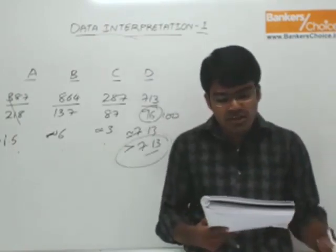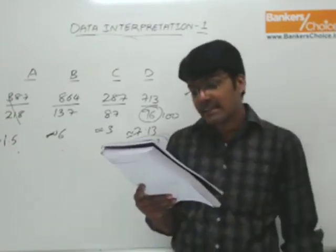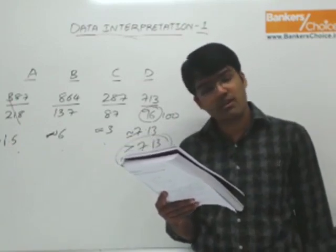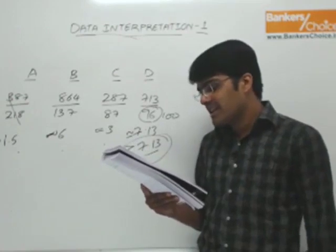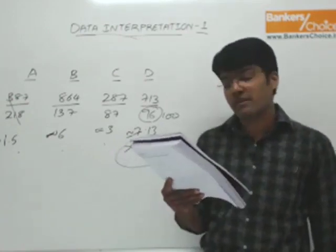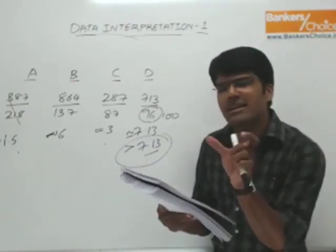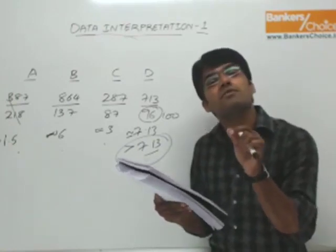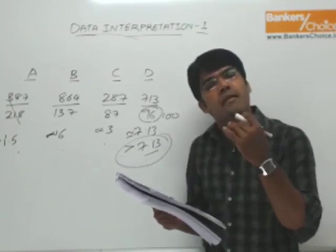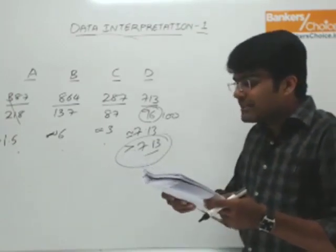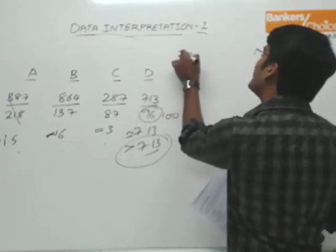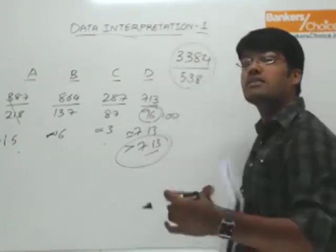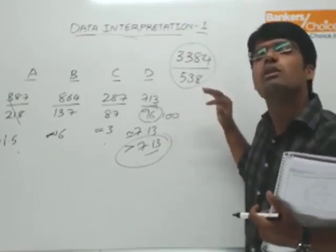Question number two: the average number of books issued to any one member is nearly the average number of novels issued to any one member of which class — A, B, C, or D? First, find the average books issued per member overall. Total books issued is 3384, total members is 538. So average is 3384 divided by 538.